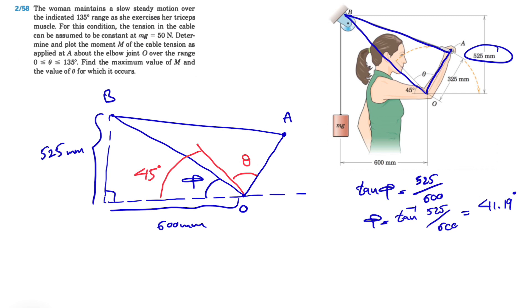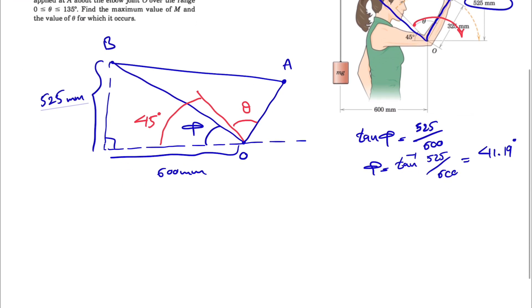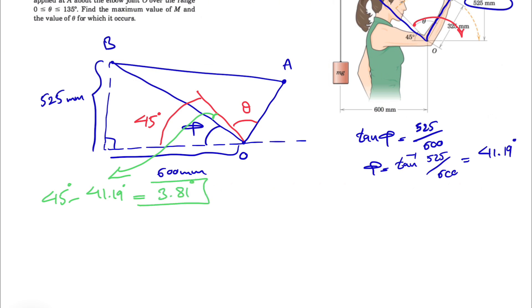The reason for finding phi first is to show that phi (41.19°) is less than 45 degrees, meaning the line connecting O to B is below the reference line from which theta starts. Theta ranges from 0 to 135 degrees. From this, we can find the small angle between OB and the 45-degree reference line: 45 − 41.19 = 3.81 degrees.